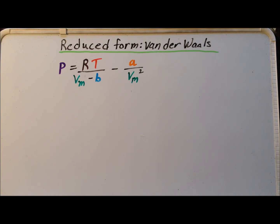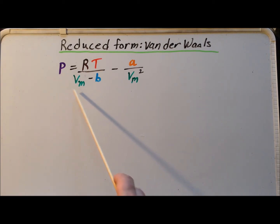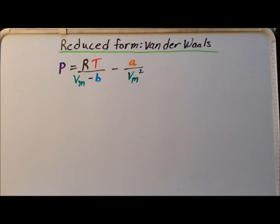We recall that we can write the van der Waals equation in the following form, where v sub m is the molar volume — that is, the volume of the gas v divided by n, the number of moles of the gas.